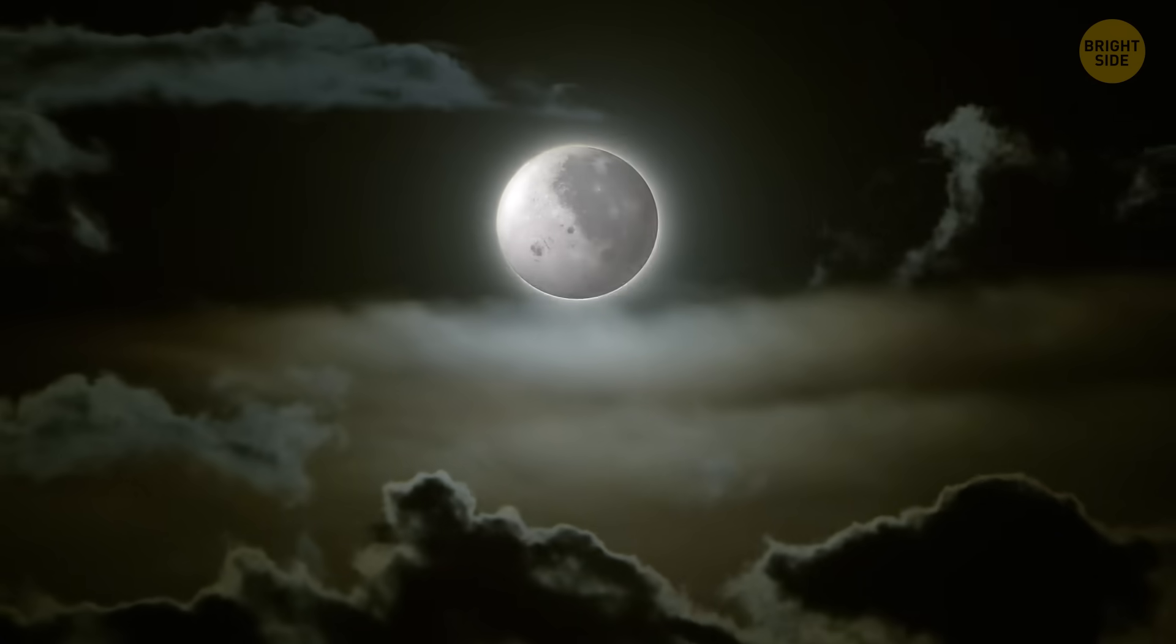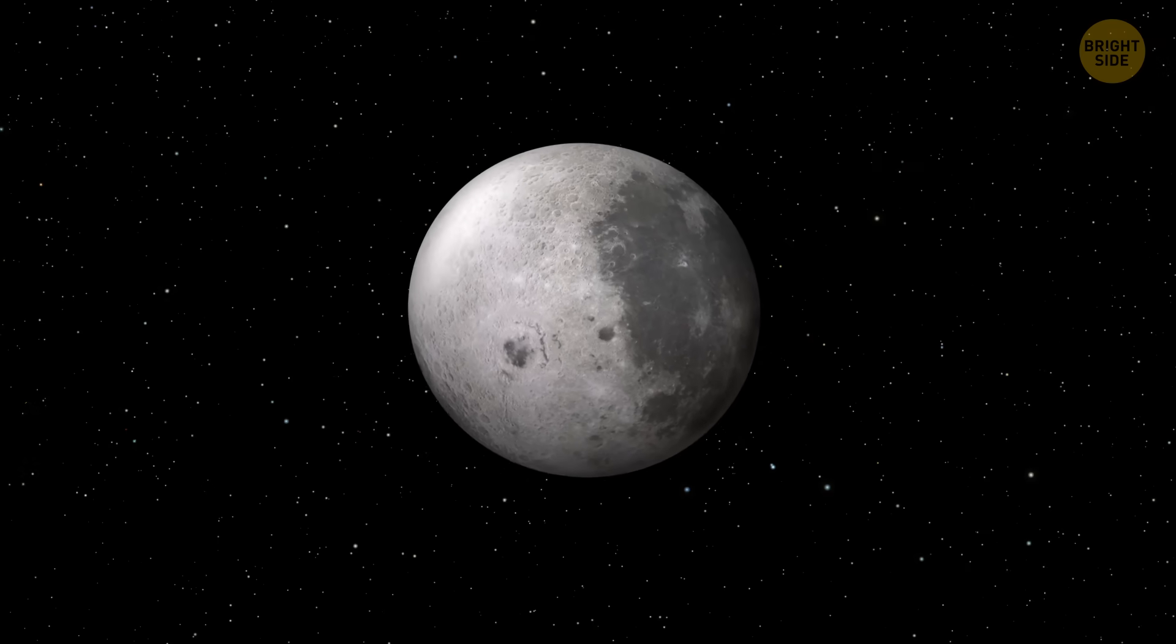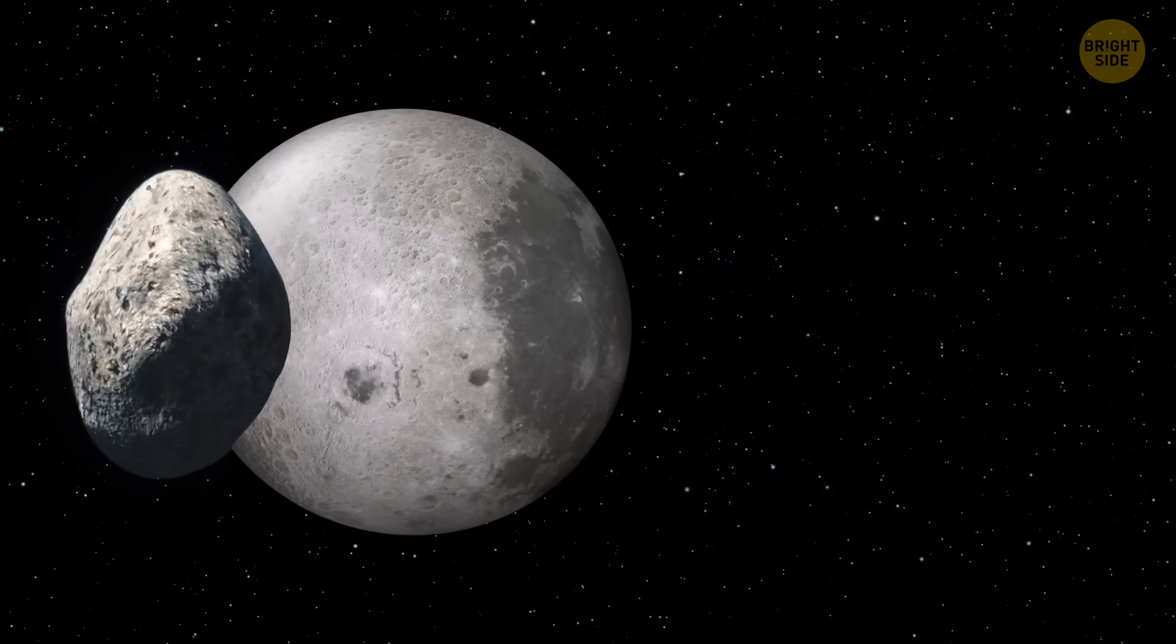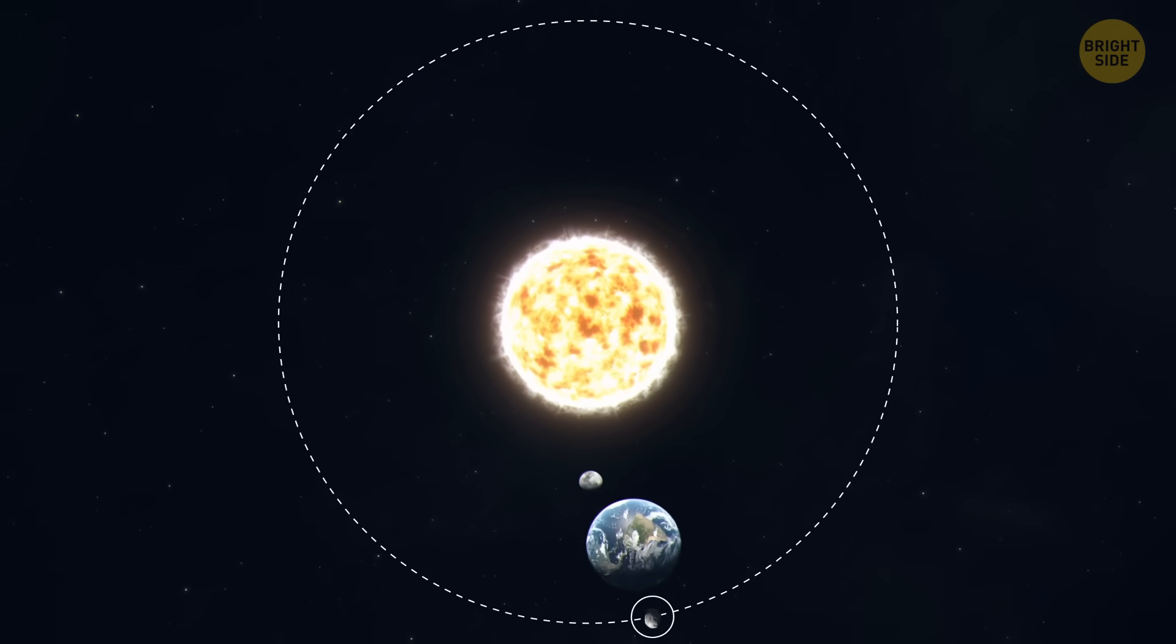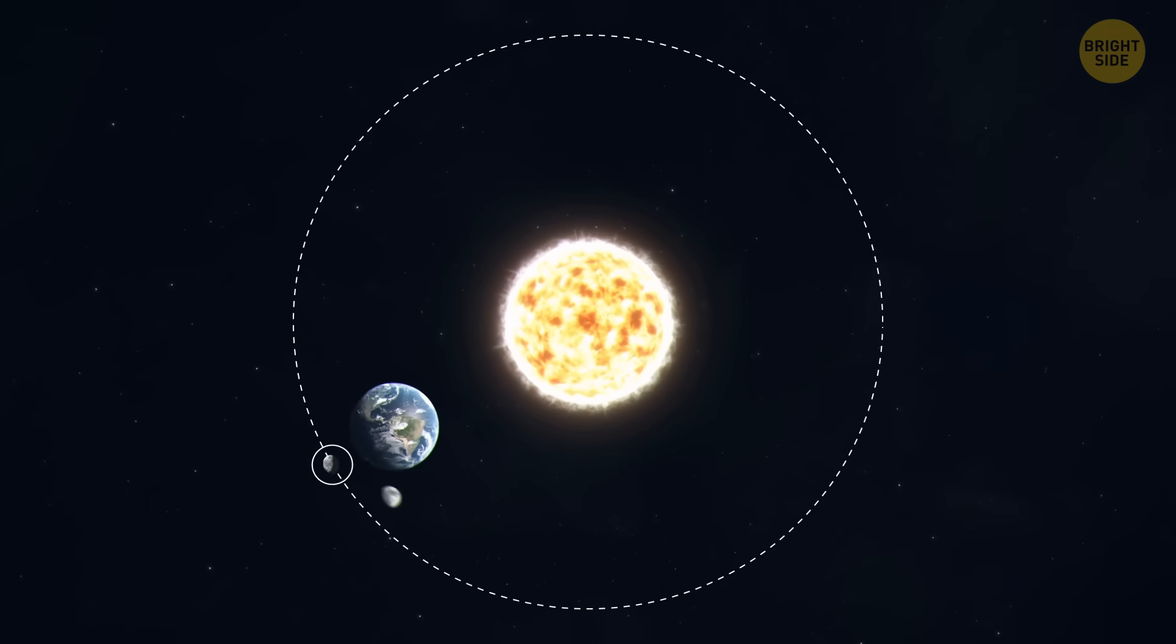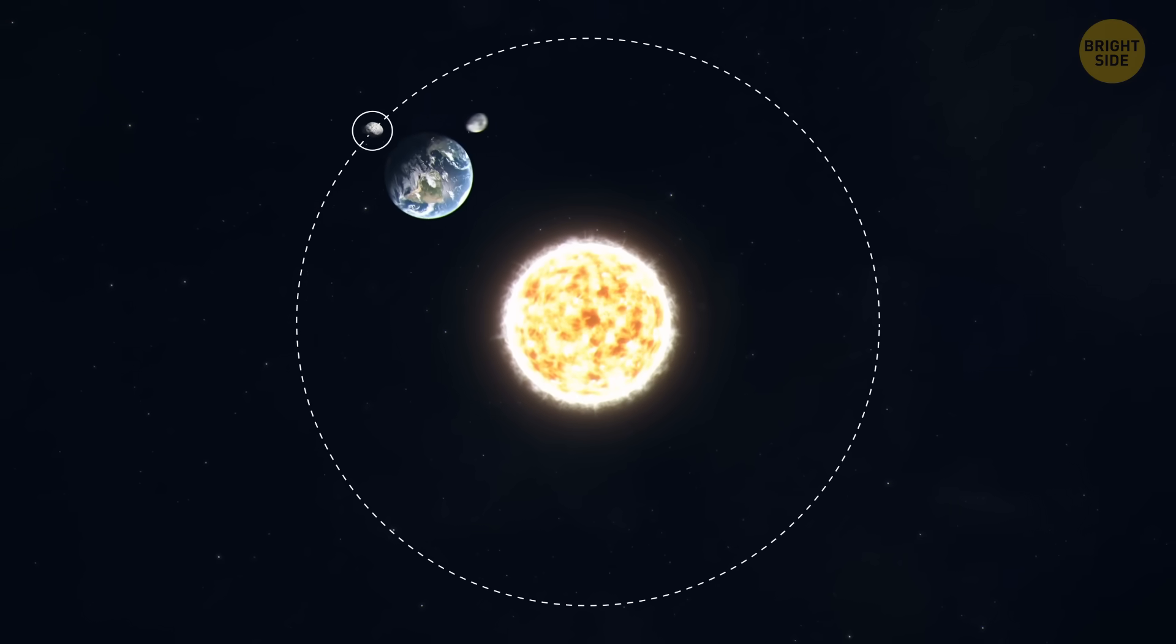Unlike our cool and mysterious moon that illuminates our nights and affects werewolves, a quasi-moon doesn't circle Earth. Instead, it orbits the Sun, but it does so almost in perfect sync with us, like a runner doing a marathon with you that keeps a similar pace.